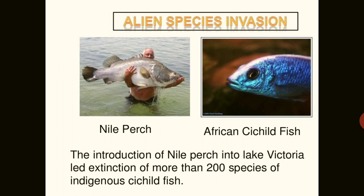Sometimes alien species invasion is a very important cause. New species entering a geographical region are called exotic, alien, or non-native species. When alien species are introduced — intentionally or deliberately, for whatever purpose — they may cause the disappearance of native or indigenous species through changed biotic interactions. Examples include the Nile perch introduced into Lake Victoria, and the African cichlid fish, which were responsible for the extinction of more than 200 species of indigenous cichlid fish.